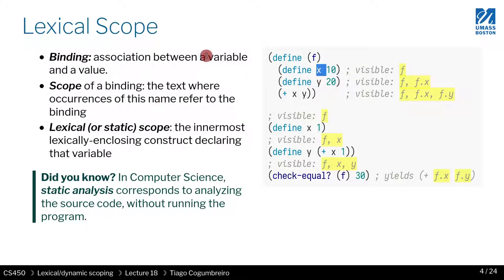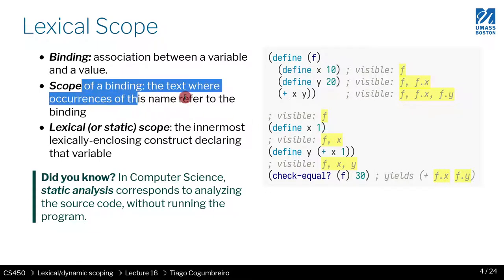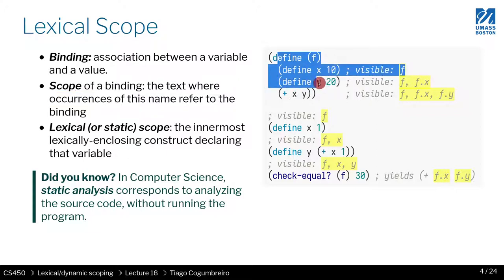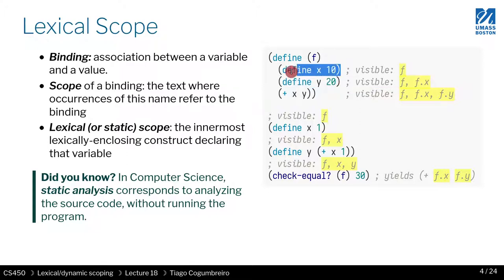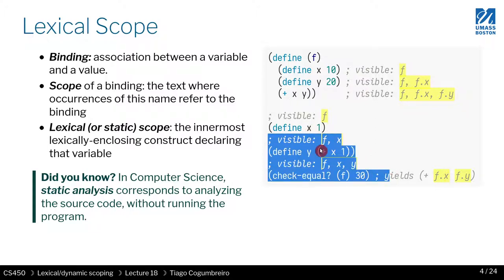Let's recap on names. A binding is what we say whenever we have a variable or an association between a value and a variable—this is a binding. The scope of a binding is the text where code refers to that variable. So the scope of this x is the rest of the body of this function. The scope of this binding is the code that follows, so x is visible here and here but invisible upwards.